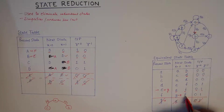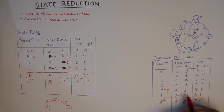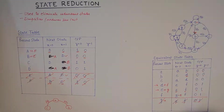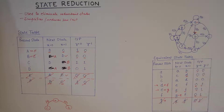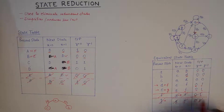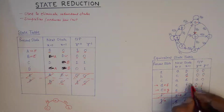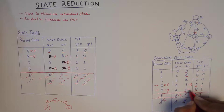Next, we check if E and F feature as next states for any other present state. F gives us E and F as next states, and D also gives us E and F as next states. So I will put D equivalent to F, and we verify that the output is 0 and 1 in both cases — which matches. So we can remove F from the table. Wherever we see F in the next state column, we replace it with D.